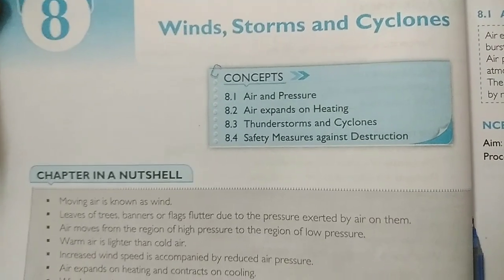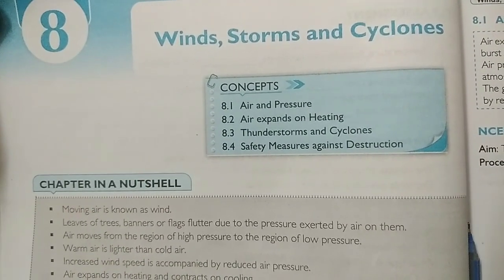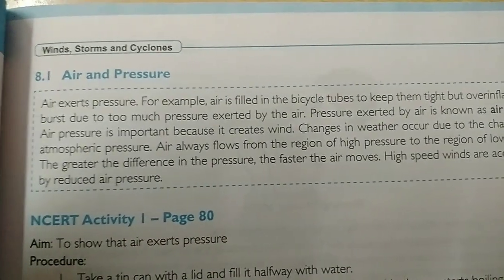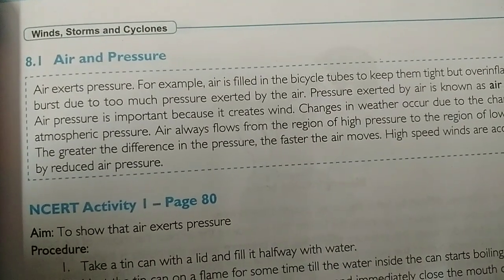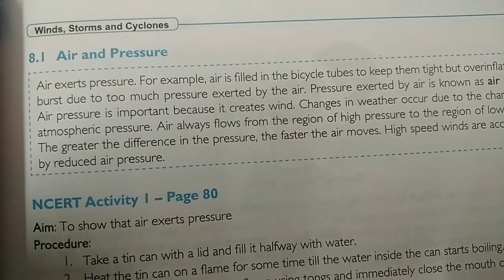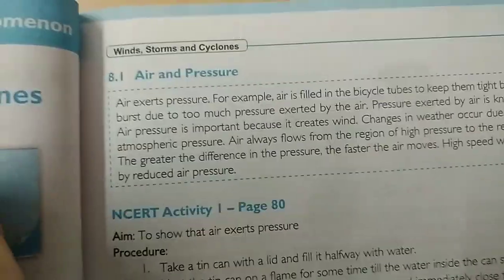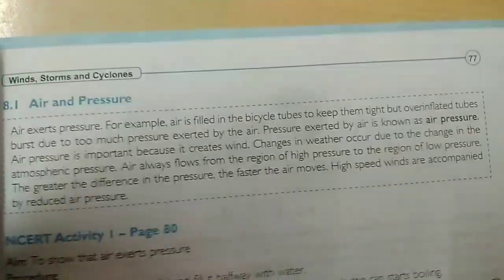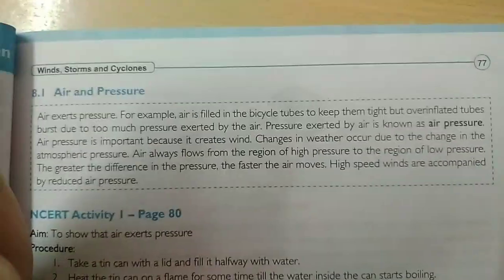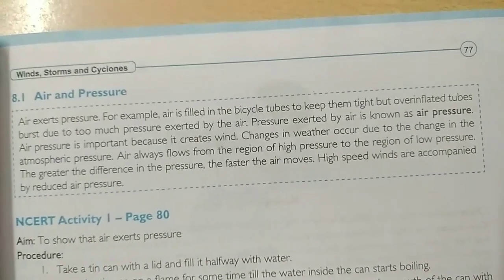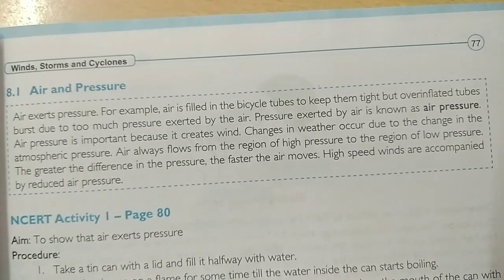Topic 8.1 - Air and Pressure. Air exerts pressure. For example, air is filled in a bicycle tube to keep it tight. If the tube has too little air, you will have to add more force to ride the bicycle. If there is enough air, the tire will be firm and the bicycle will be easier to ride.